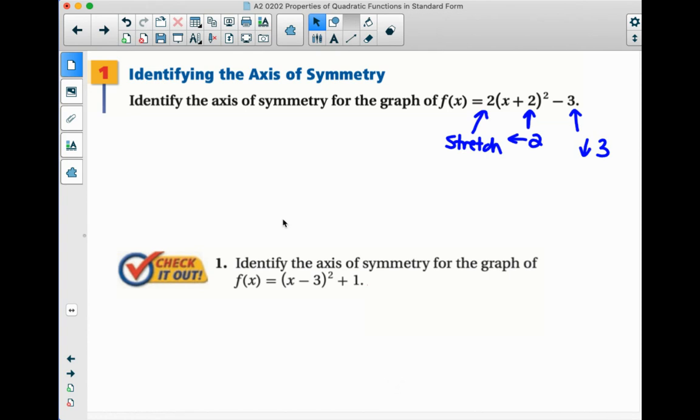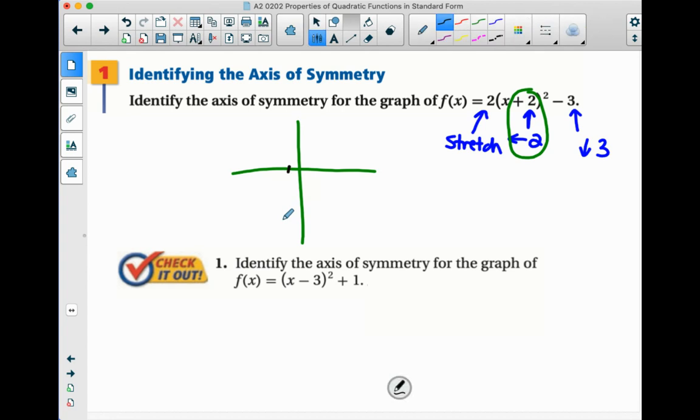But really the only part that matters for finding the axis of symmetry is this part right here. If this were our graph, we would be shifting to the left 2, and that would perfectly divide our graph in half. So the axis of symmetry is that x equals negative 2.